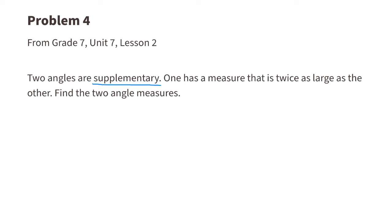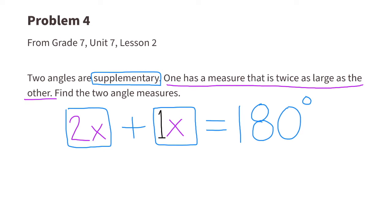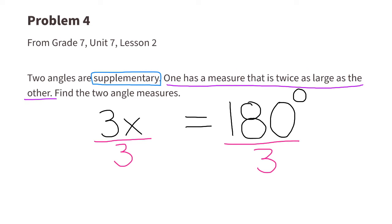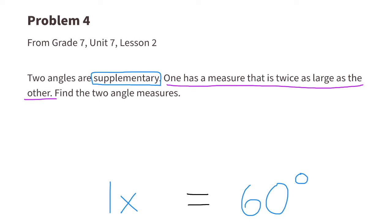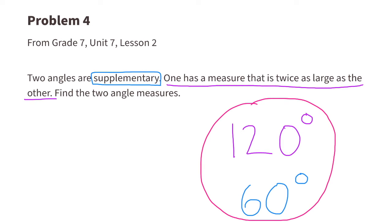Problem number 4, from 7th grade Unit 7, Lesson 2. Two angles are supplementary. One has a measure that is twice as large as the other. Find the two angle measures. Since the sum of two supplementary angles is 180 degrees, and one measure is twice as large as the other, we write 2x plus x equals 180 degrees. 2x plus 1x is 3x, so 3x equals 180. Dividing both sides by 3, x equals 60 degrees. The two supplementary angles are 60 degrees and 120 degrees.